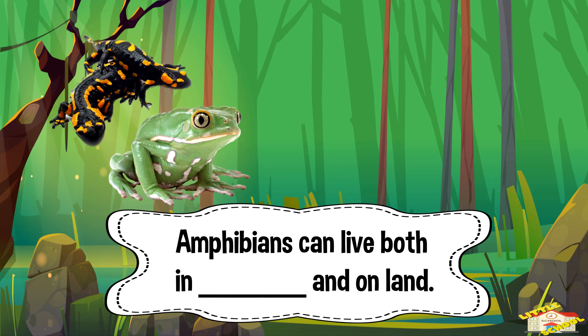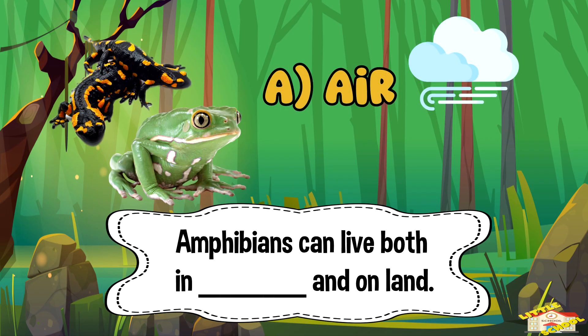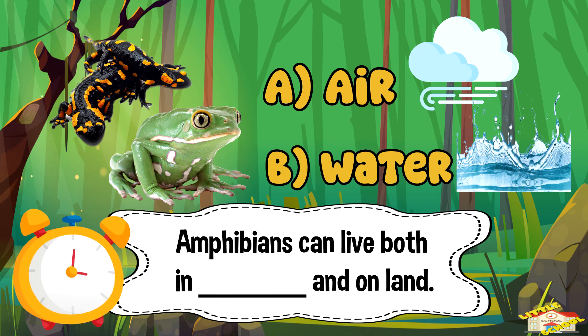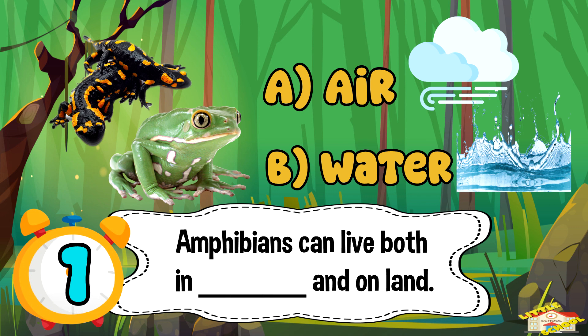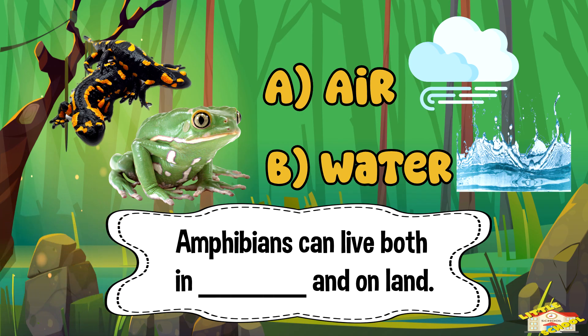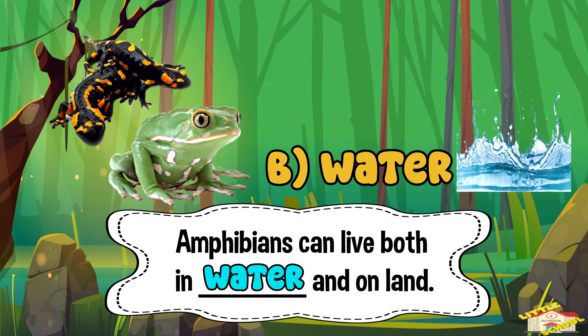Question 2: Amphibians can live both in blank and on land. A) Air, or B) Water? And the answer is water — amphibians can live both in water and on land.